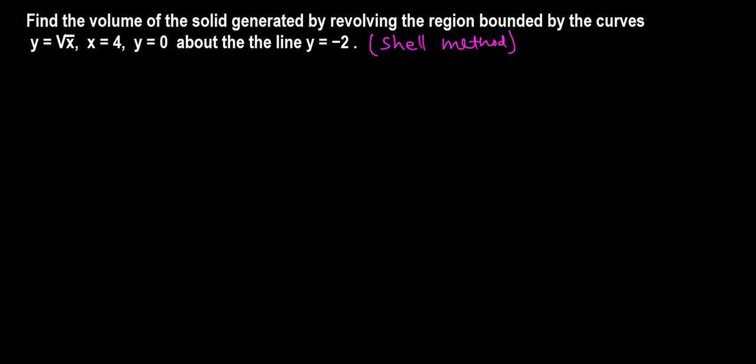In any case, we first want to graph these curves. So here is the vertical axis, y-axis, and here is the x-axis. The first curve is y equals root x, passing through the origin. So here is root x: x equals 4, 1, 2, 3, 4.